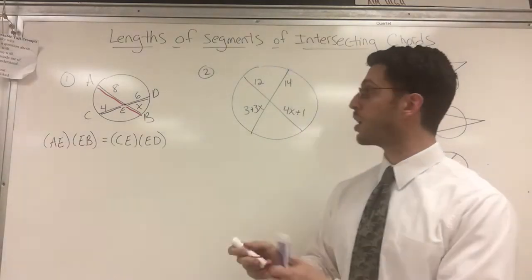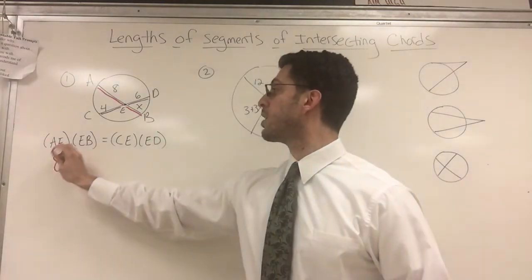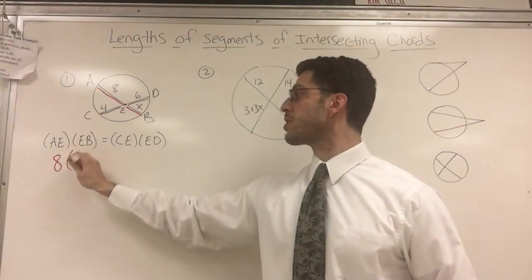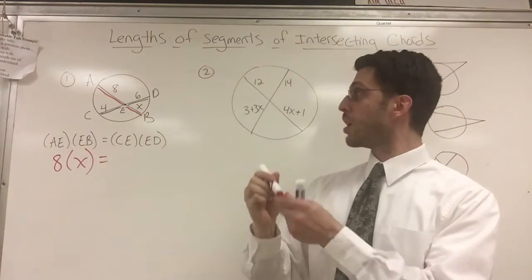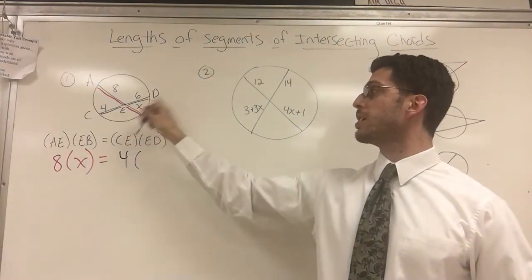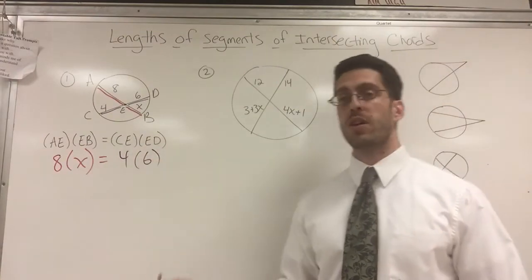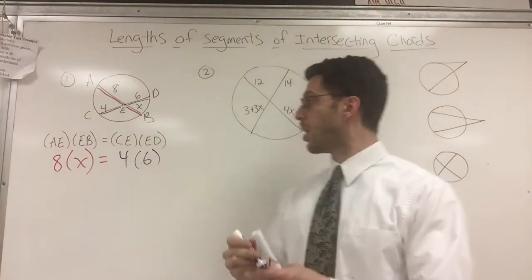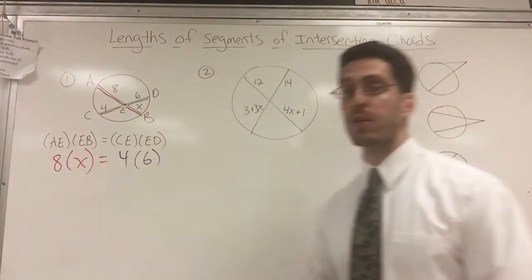Alright, so let's do it. AE is 8 times EB is X equals CE is 4 and ED is 6. So if I'm trying to solve for X in these two questions, I'm going to solve for X. This should be straightforward algebra.